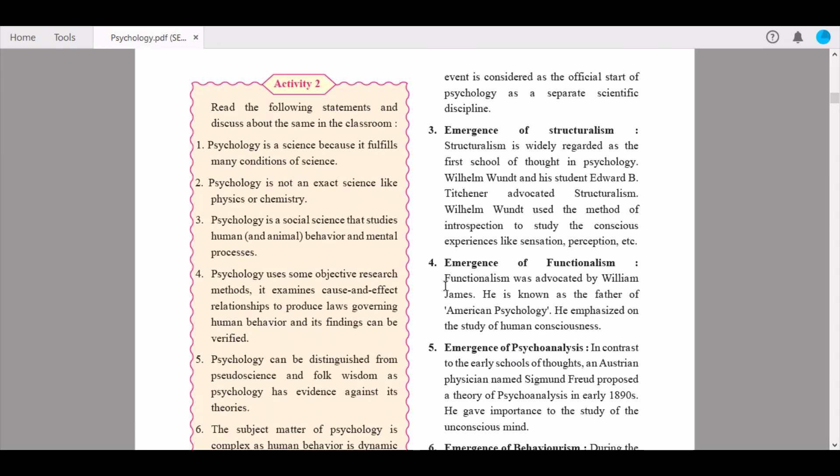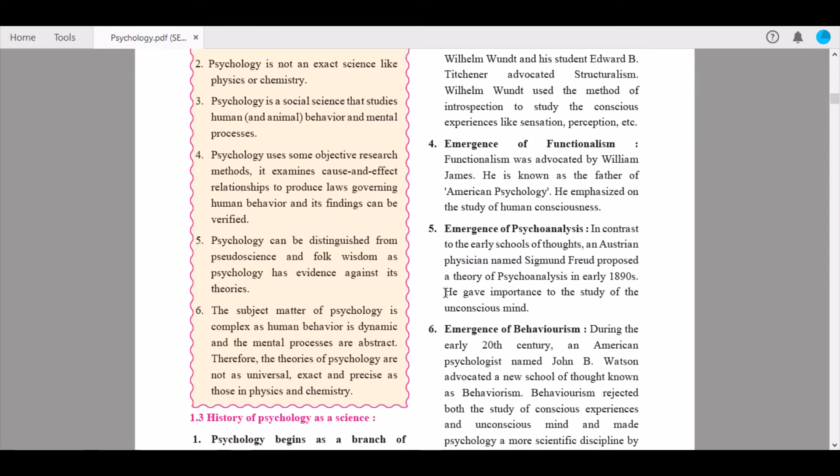Fourth is emergence of functionalism. Functionalism was advocated by William James. He is known as the father of American psychology and emphasized the study of human consciousness. Fifth is emergence of psychoanalysis. In contrast to early schools of thought, Austrian physician Sigmund Freud proposed a theory of psychoanalysis in the 1890s. He gave importance to the study of the unconscious mind.